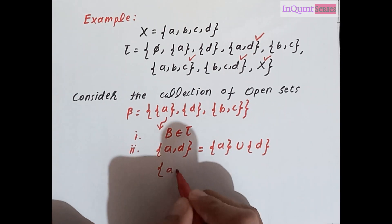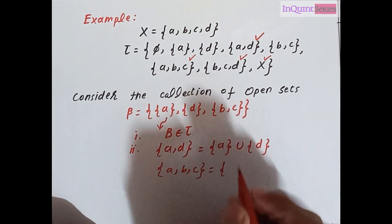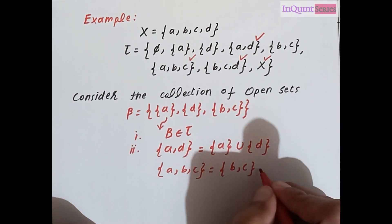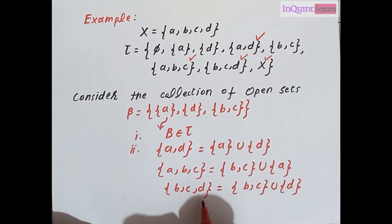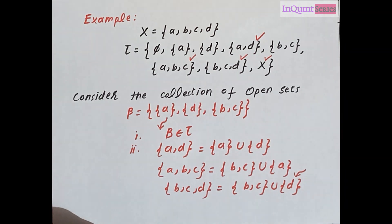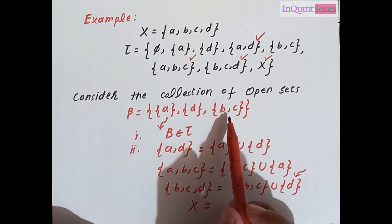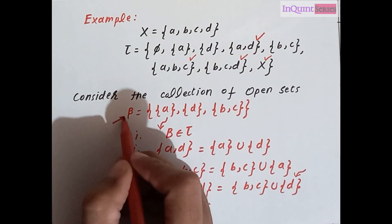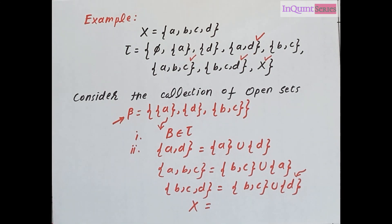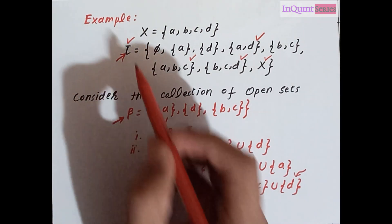Similarly, {a, b, c} can be obtained by taking the union of {b, c} and {a}. Also, {b, c, d} can be obtained by taking the union of {b, c} and {d}. And x can be obtained by taking the union of all elements of that collection. So beta satisfies all the properties for being a base, and we say beta is a base for that topology.